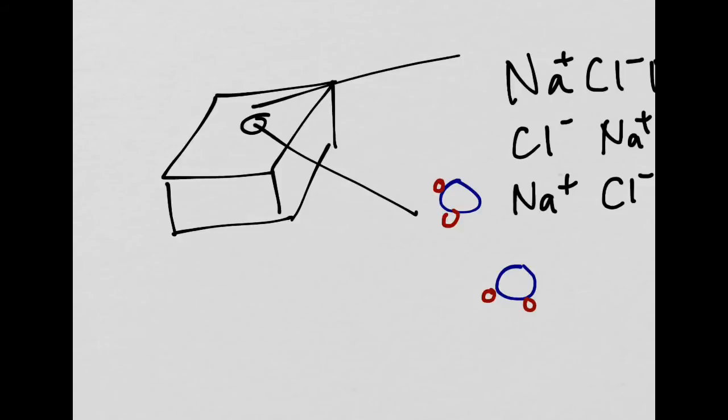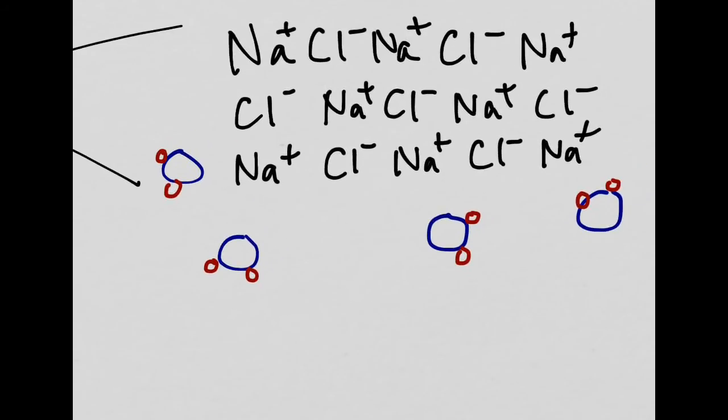So if we cruise back to this cube here, the surface of the cube is going to have the exposed sodium and chloride ions, and the center will be in some sense protected, at least initially it will be. So what happens here is,